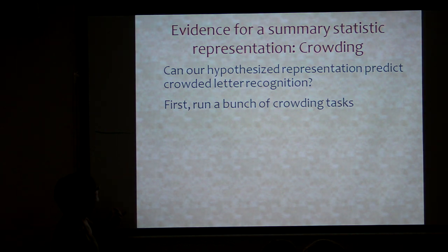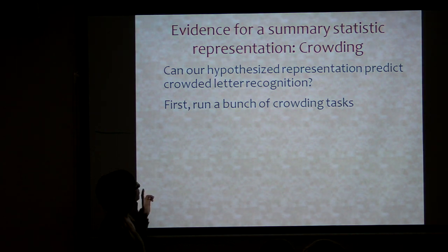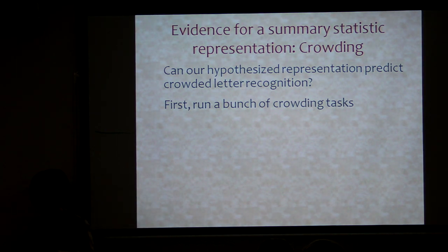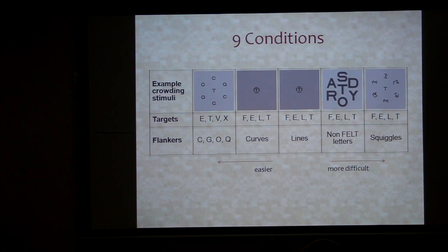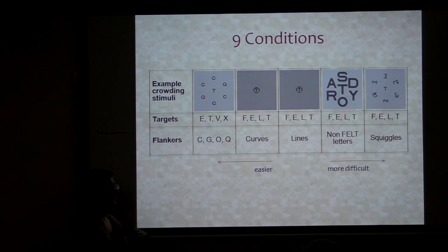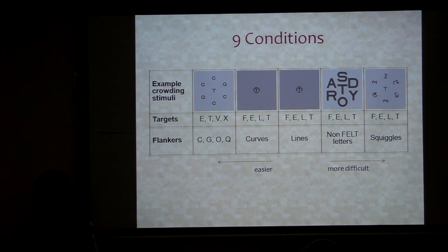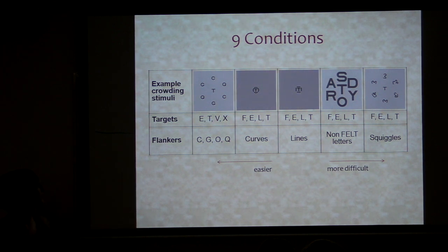Can this representation predict crowded letter recognition? First you've got to run a bunch of crowding tasks to get a range of performance, so you have something for your model to try and predict.